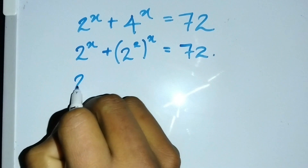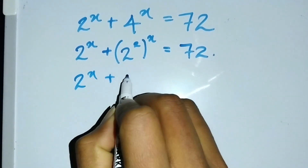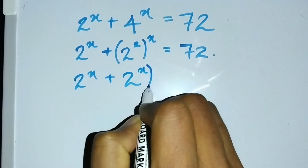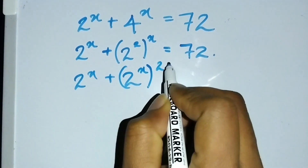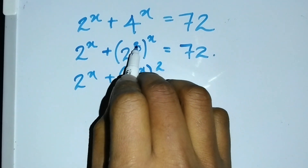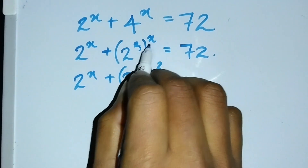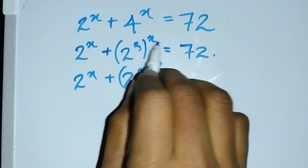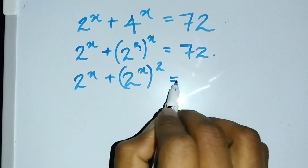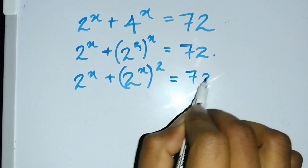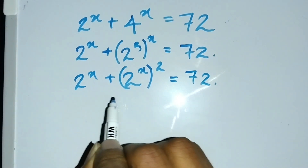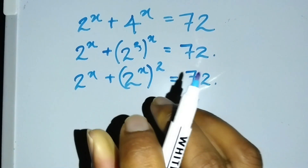This becomes 2^x plus (2^x)^2 equals 72. I can take the second power outside the bracket and bring the x power inside the bracket.